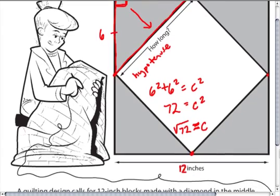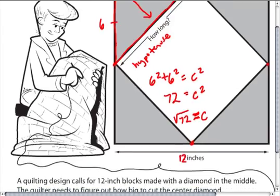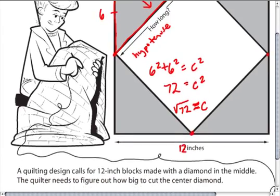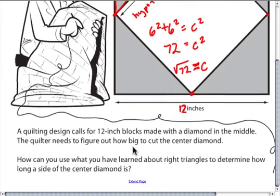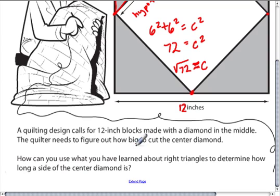So in this problem right here, we can tell the hypotenuse right here is about 8.5 inches. Now, in this problem, they ask us to do a few things. They ask us to look at that side length right there. But they also want to know how big is the center diamond.